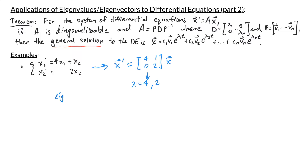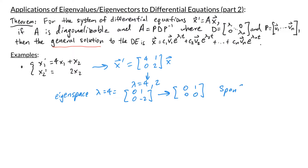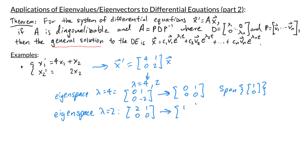For lambda equals 4, we look at the null space of A minus lambda I, which in this case is the matrix 0, 1, 0, negative 2. This row reduces to 0, 1, 0, 0, so the eigenspace is the span of the vector (1, 0). For lambda equals 2, the matrix row reduces to 1, 0, 0, 0, so the eigenspace is the span of the vector (negative 1/2, 1).